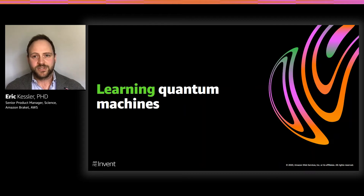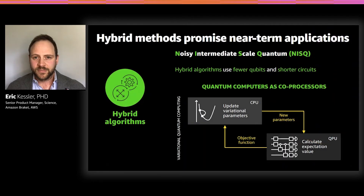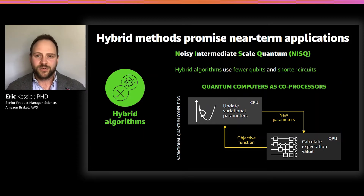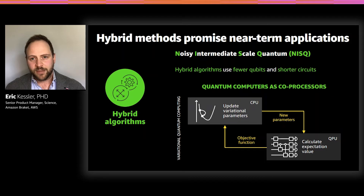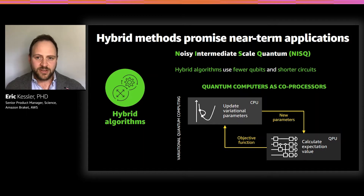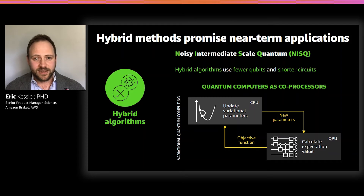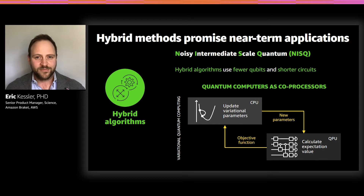These hybrid algorithms borrow powerful ideas from machine learning, as we will see on the next couple of slides. Hybrid algorithms use quantum computers as coprocessors to classical computations, very much in the same way a GPU is used to speed up the training of machine learning models. Instead of trying to execute an end-to-end algorithm, the QPU — the quantum processing unit or the quantum computer — performs only short and bursty calculations that are within the limits of the capabilities of the device you're running on. And I want to pause here for a second, because this is actually a very powerful idea inspired from machine learning.